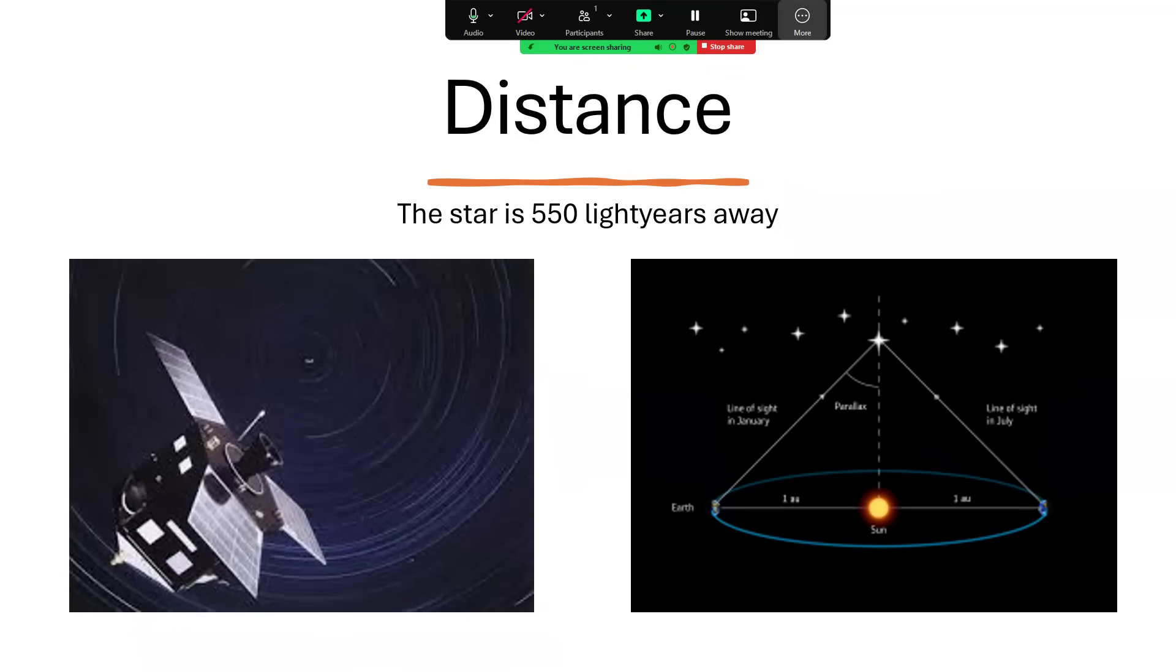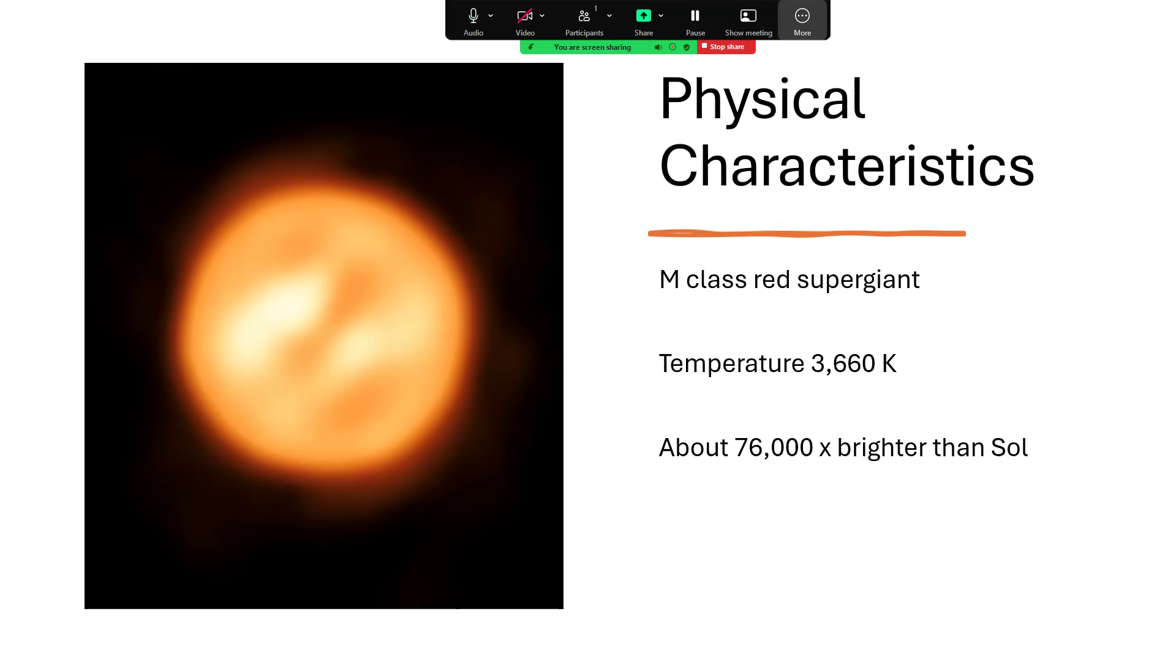Gaia doesn't have quite the ability to measure these very bright stars. It's overwhelmed by the power output. It's really designed for much fainter objects. So we're relying on these other methods at the moment to estimate this 550 light year distance.